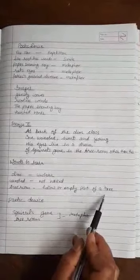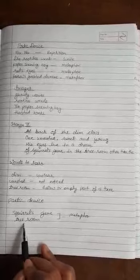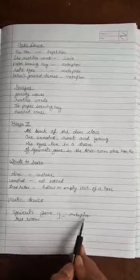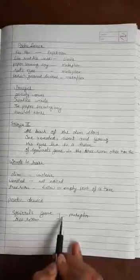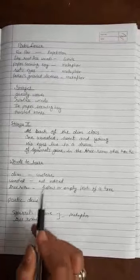Words to learn here: dim, unclear; unnoted, not noticed; tree room, hollow or empty part of a tree. Now poetic device: squirrel game and tree room, metaphor. In both the images, the poetic device is metaphor.